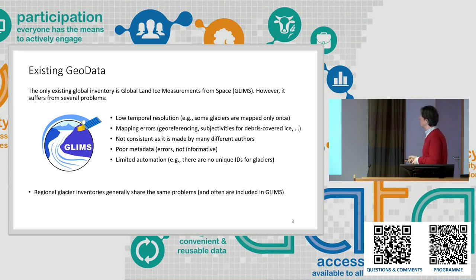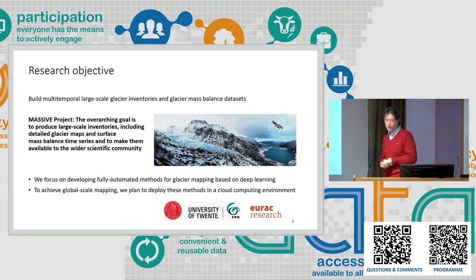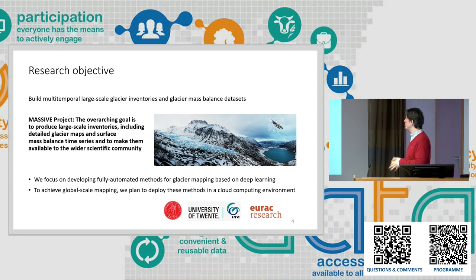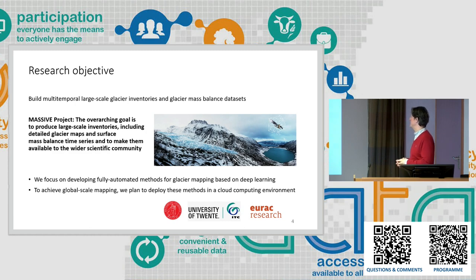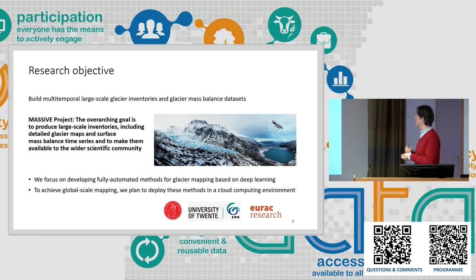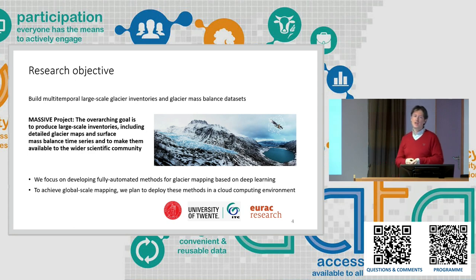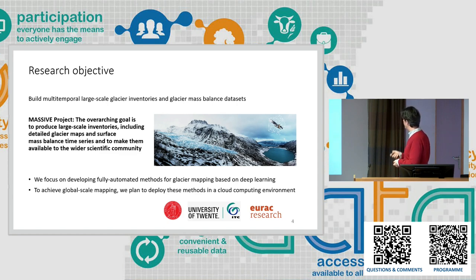What we would like to do — and this is the aim of the project called MASSIF — is to use machine learning to produce large-scale inventories including detailed maps of glacier outlines but also the surface mass balance. We want to do this at different times, so we can look back over the last 40 years and produce a time series of how glaciers are changing. This project involves several partners: the University of Oslo, us, and EURAC Research in Bolzano, Italy.